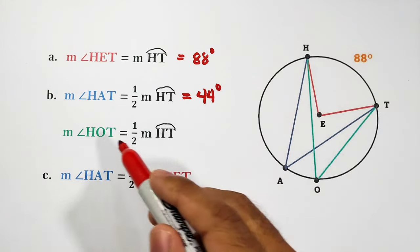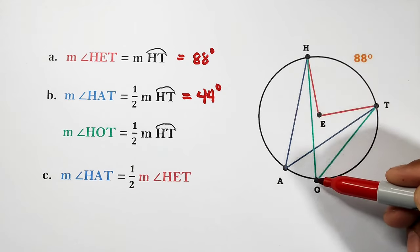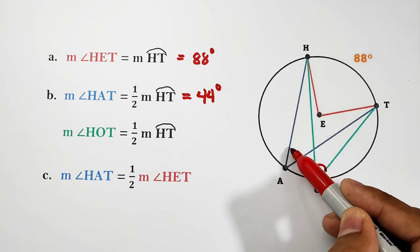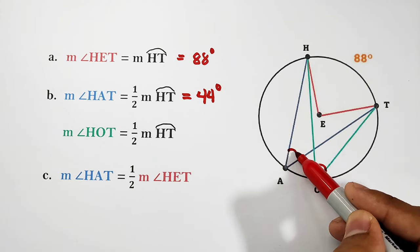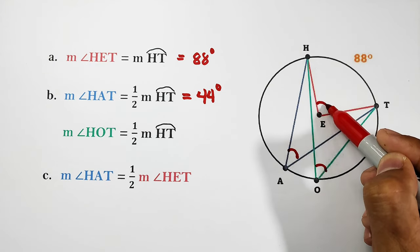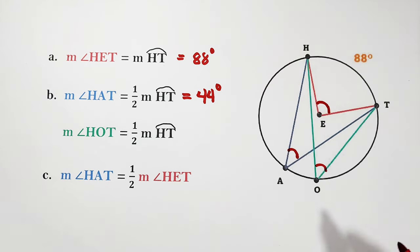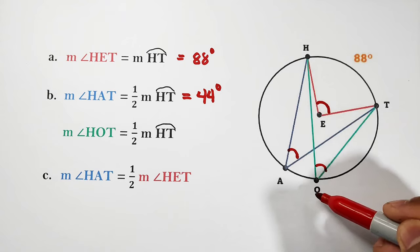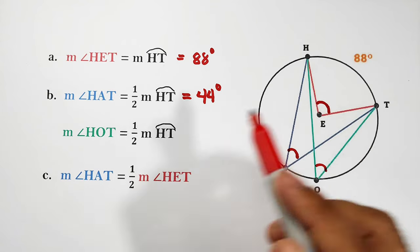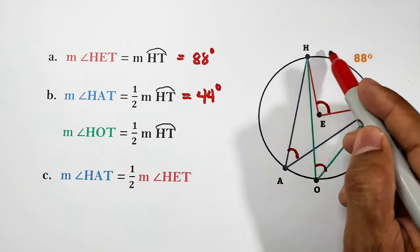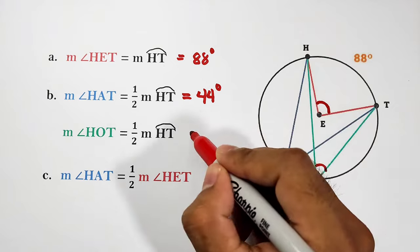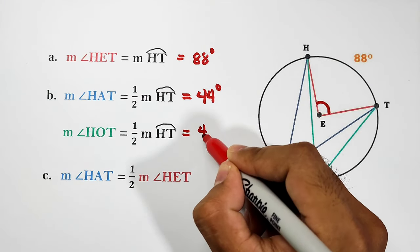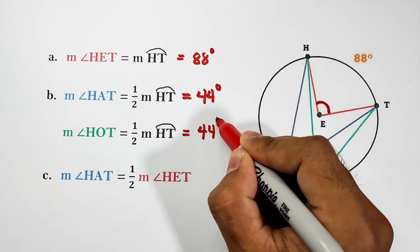How about angle HOT? Angle HOT is also one half of the intercepted arc, which is HT. Therefore, they have the same measure, which is 44 degrees.